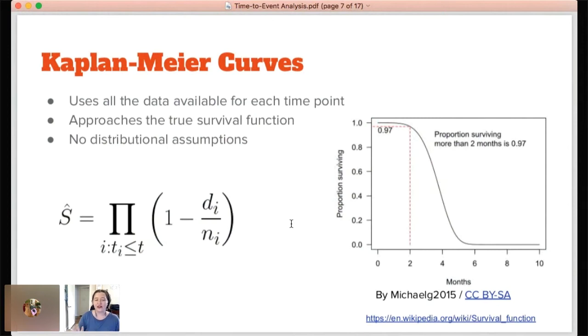And one other wrinkle of the survival function itself is that this estimator of it will often not go all the way to zero because you would have to have every single you would have to have one minus one in the product. And that would mean that every single one of the observations that you knew about at a certain time saw the event. But we know we have censored data so that's not likely to happen.